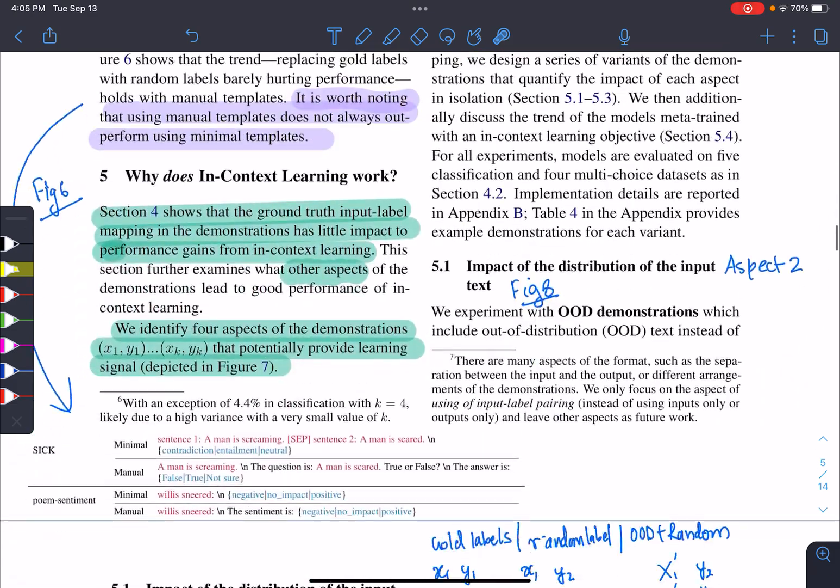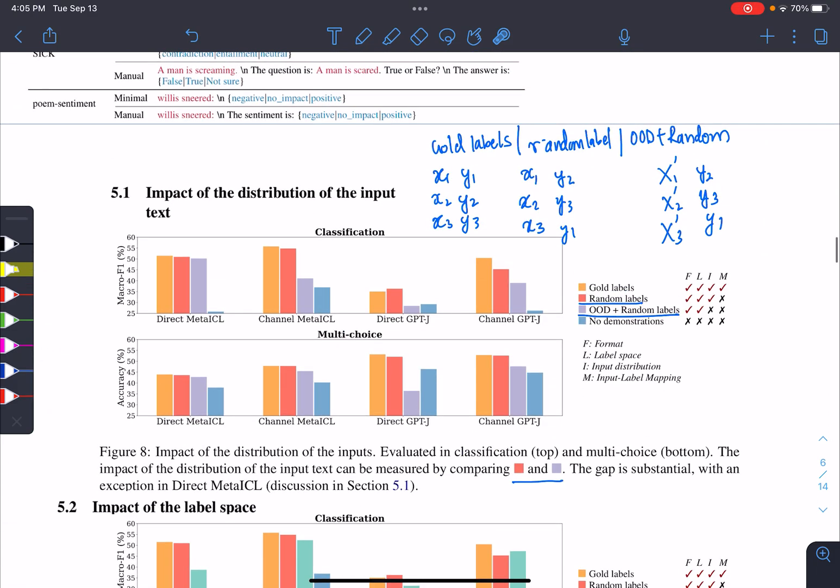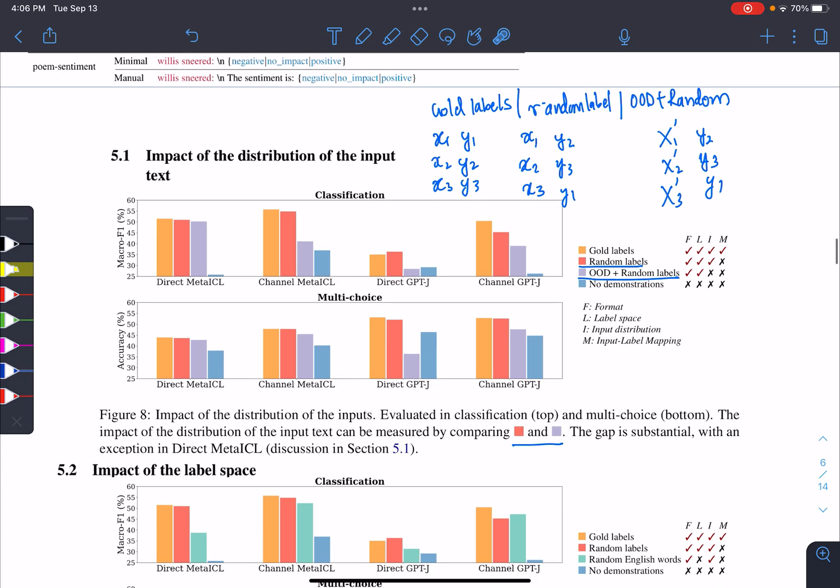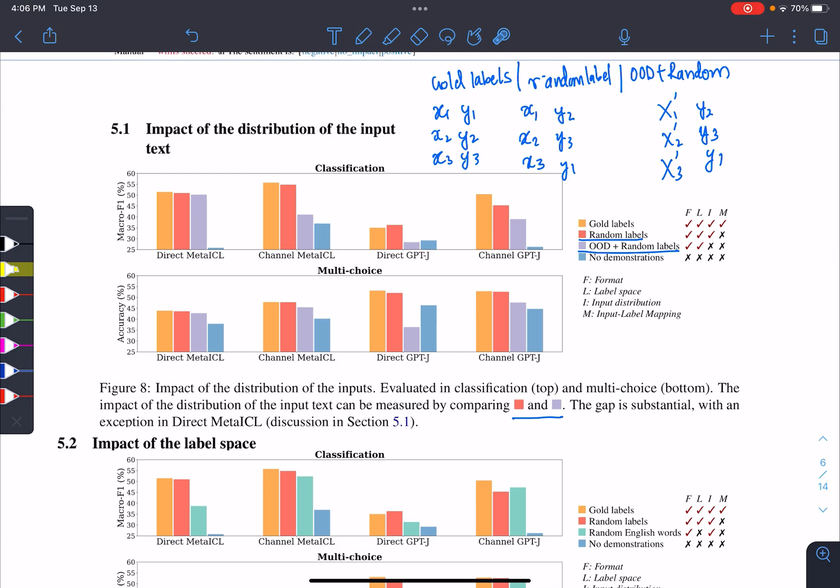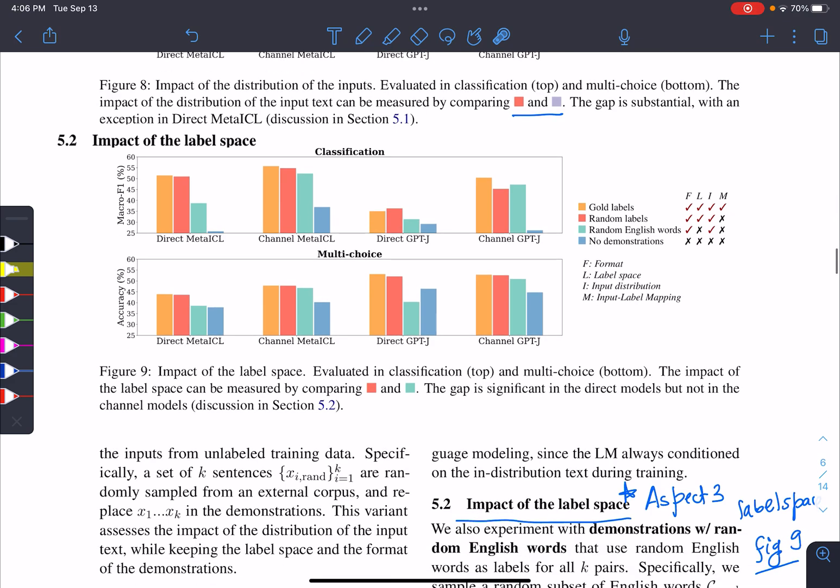The second aspect is the distribution of input dataset. We have gold labels and we have random labels in this way. And out of distribution means we keep the random labels as it is, but we replace the x, the input, with some external source. And what we found, now we have to compare the yellow and purple. Yellow is the random, this belongs to this one. And this belongs to this case. We found that it significantly reduces in almost every case. So it is important. It is one of the important factors.